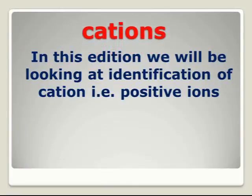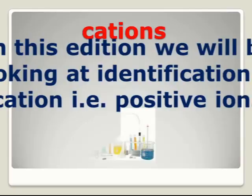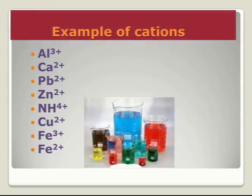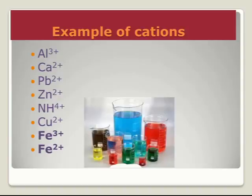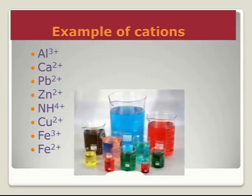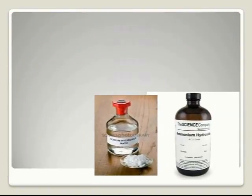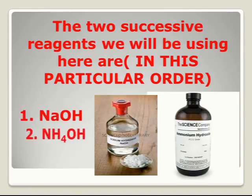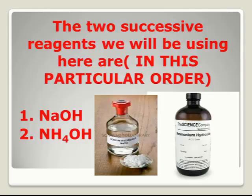In this edition, we will be looking at identification of cations, that is, positive ions. Examples of cations we will be looking at are aluminium, calcium, lead, zinc, ammonium, copper, iron-3, and iron-2. The two successive reagents we will be using, in this particular order, are: 1) sodium hydroxide and 2) ammonium hydroxide. We will first use sodium hydroxide followed by ammonium hydroxide.